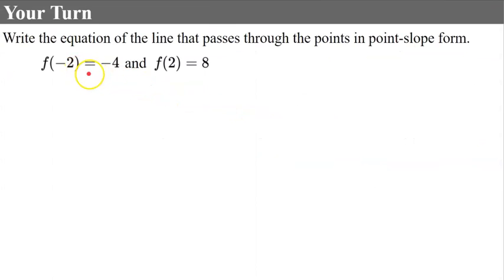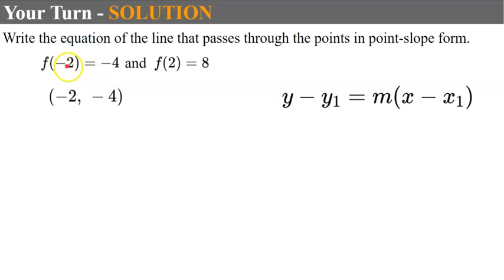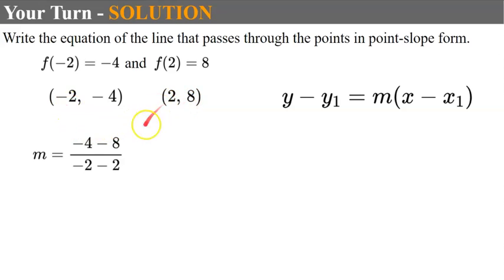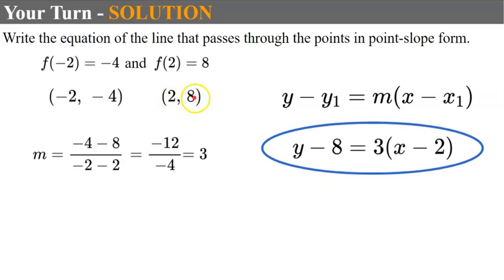Using function notation, write the equation in point slope form. The ordered pairs are (negative 2, negative 4) and (2, 8). Finding slope: negative 4 minus 8 over negative 2 minus 2 gives negative 12 over negative 4, or a slope of 3. Using the second point since both coordinates are positive: y minus 8 equals 3 times the quantity x minus 2. Using the first point gives y plus 4 equals 3 times the quantity x plus 2 — equivalent equations.